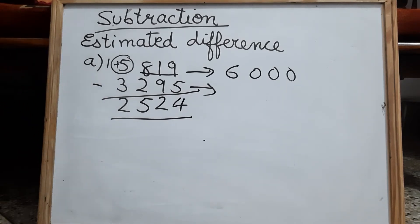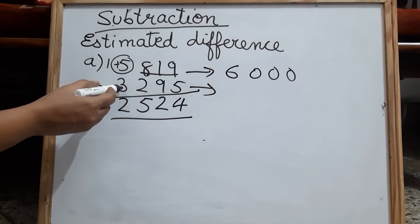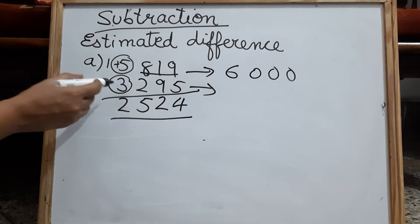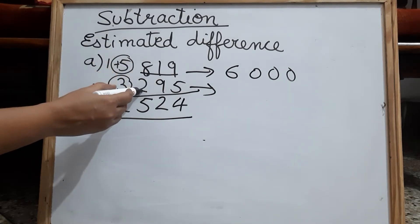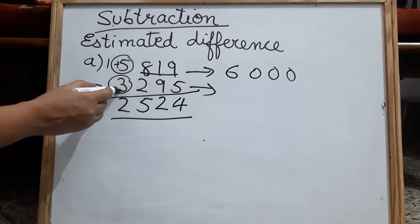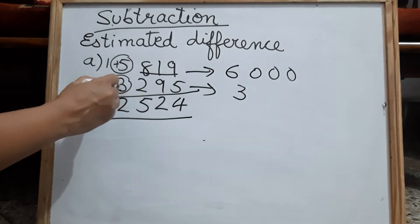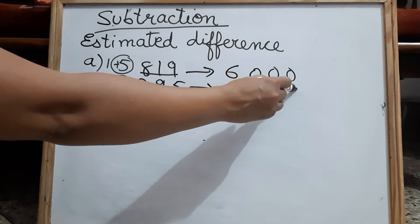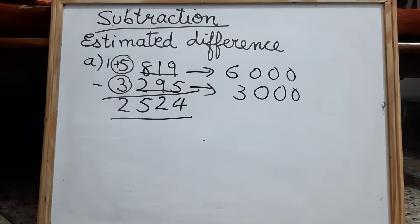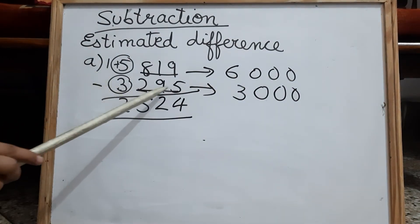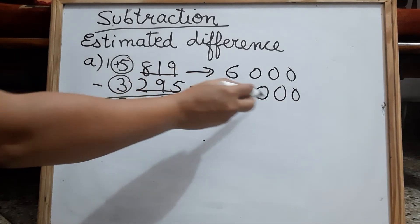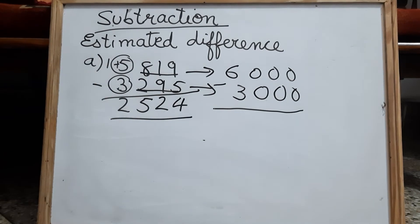Coming to the next number, we are going to estimate the thousands place. The next right side digit is 2, which is less than 5. So no change in the required place — it remains 3, and the rest of the 3 digits will become 0. So 3295 is estimated to 3000. Now you can find the difference, and this is called the estimated difference.